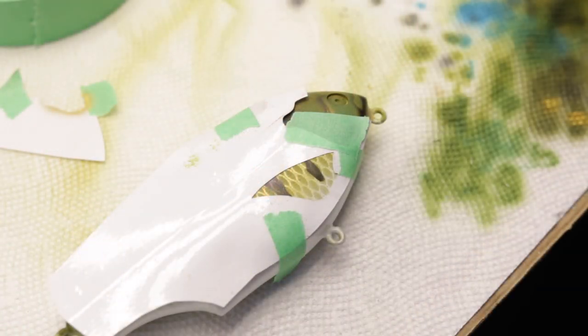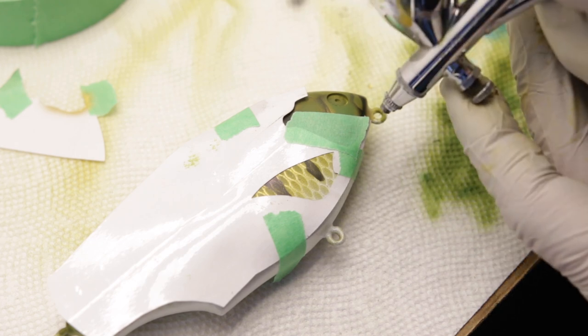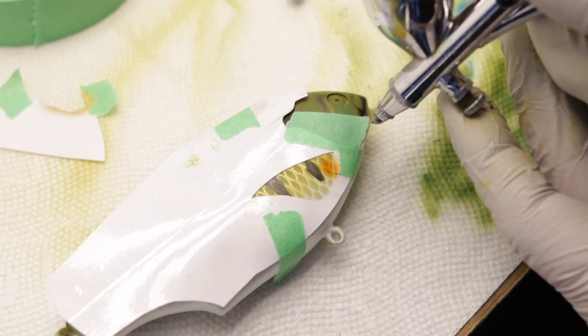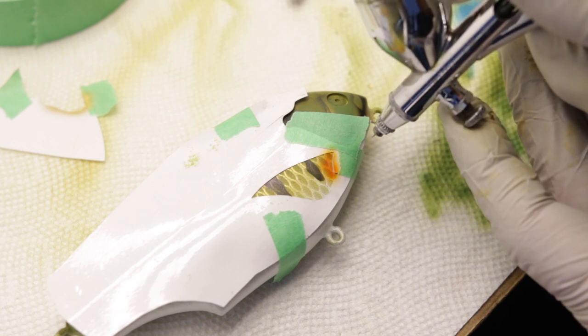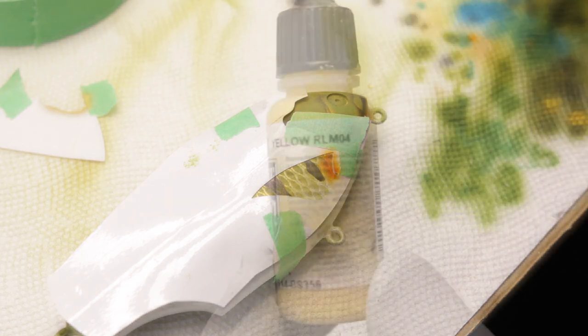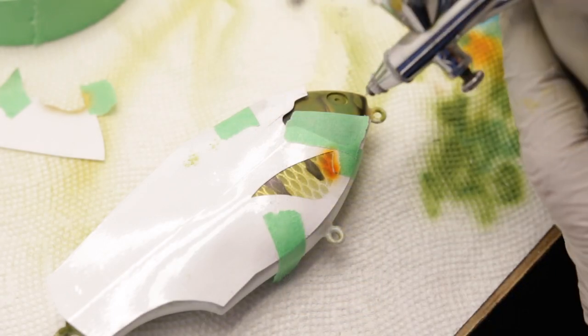Now we're going to move on to the fins and I'm going to start it off by spraying just a little bit of orange on the connection point of the fin. After that I'm going to be spraying some yellow as a background color.